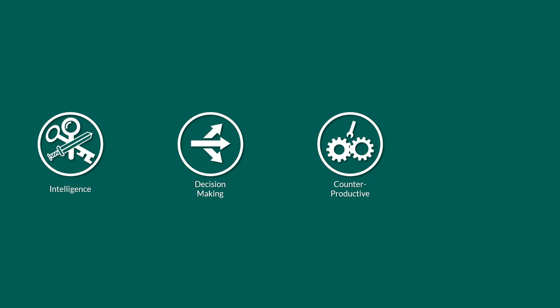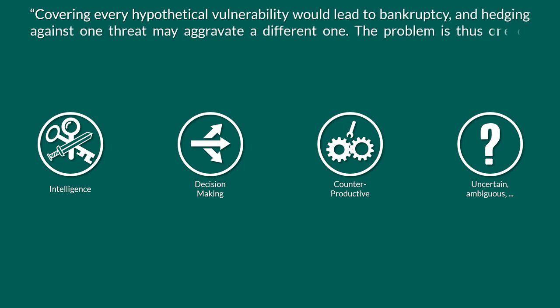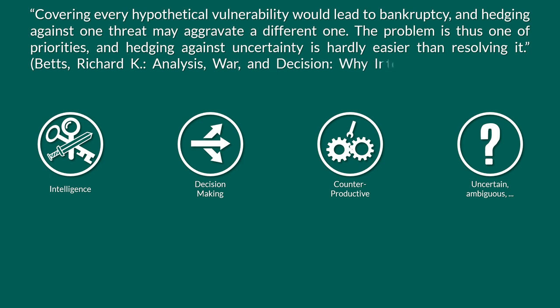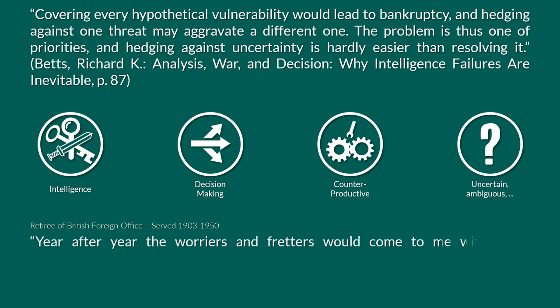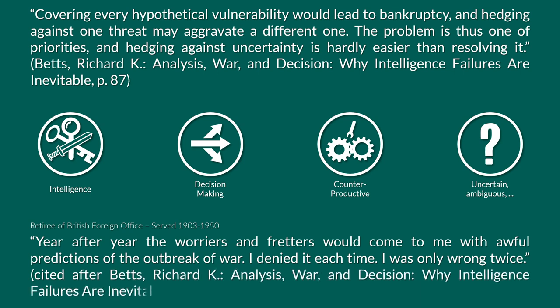Intelligence operates in an environment of uncertainty, ambiguity, and time constraints. These factors are severe enough, even without the various psychological dispositions, to lead to various problems. Hence it is important to focus on a proper trade-off. Covering every hypothetical vulnerability would lead to bankruptcy, and hedging against one threat may aggravate a different one. The problem is thus one of priorities, and hedging against uncertainty is hardly easier than resolving it. Or to take a more sarcastic note, a retiree of the British Foreign Office who served from 1903 to 1950 supposedly stated: 'Year after year the warriors and threateners would come to me with awful predictions of the outbreak of war. I denied it each time. I was only wrong twice.'